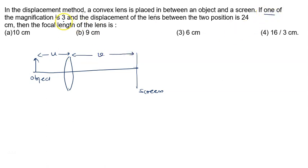If one of the magnifications is 3, then m equals V upon U equals 3. This means V can be written as 3 times U.